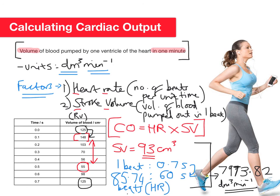To recap: cardiac output is the volume of blood pumped by one ventricle of the heart in one minute, and depends on two key things — heart rate and stroke volume. Given a table of data, find the highest and lowest volume values to get stroke volume, then use a ratio to convert the beat cycle time to beats per minute for heart rate. Multiply the two together and you have cardiac output. 7,973 does look quite high, but that is the correct number. Hope that helps — bye!